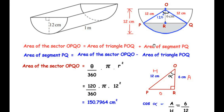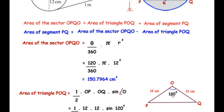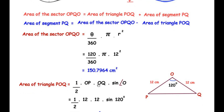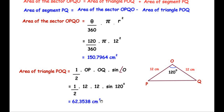Now we find the area of triangle POQ. With θ = 120°, OP = 12cm and OQ = 12cm, the formula is: area = ½ × OP × OQ × sin(angle O) = ½ × 12 × 12 × sin(120°) = 62.3538 cm². Again we keep 4 decimal places for precision.